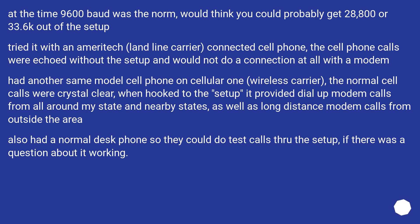At the time, 9600 baud was the norm, though they thought you could probably get 28,800 or 33.6k out of the setup. They tried it with an Ameritech landline-carrier-connected cell phone, but those calls were echoed without the setup and would not do a connection at all with a modem. They had another same-model cell phone on Cellular One; those normal cell calls were crystal clear, and when hooked to the setup it provided dial-up modem calls from all around their state and nearby states, as well as long-distance modem calls. They also had a normal desk phone so they could do test calls through the setup if there was a question about it working.